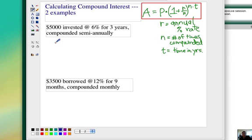Let's look at this first one. You're going to take $5000 invested at 6% annual percentage rate for 3 years, compounded semi-annually. That means twice a year. Let's go ahead and plug in the numbers here.